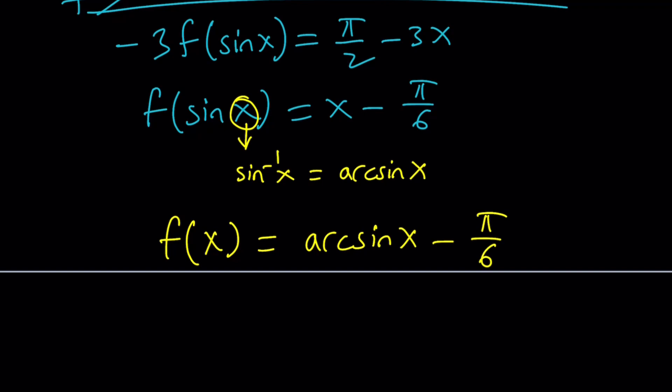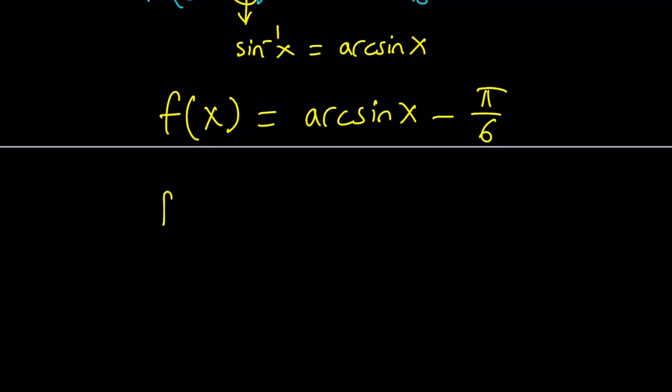Now let's find the derivative. If you just differentiate it, hopefully you remember this. How do you differentiate arc sine x? It is equal to 1 over the square root of 1 minus x squared.